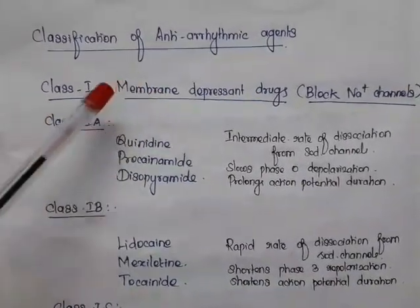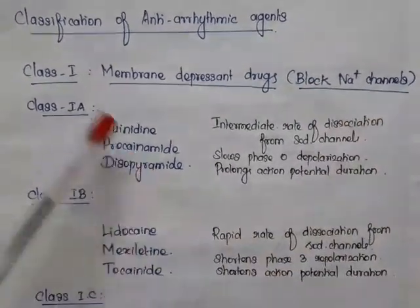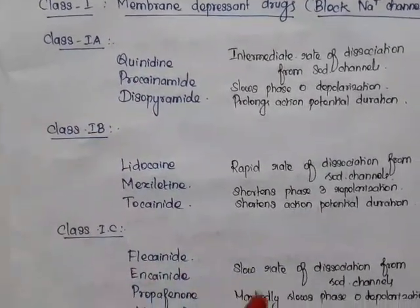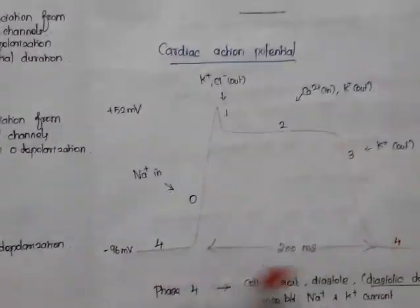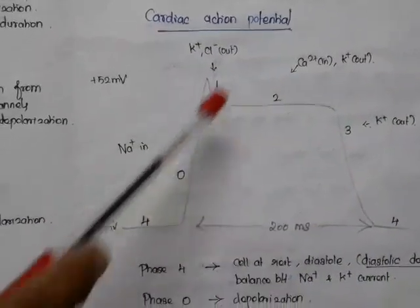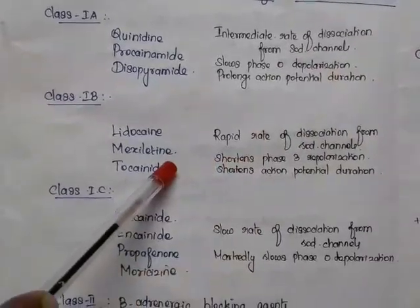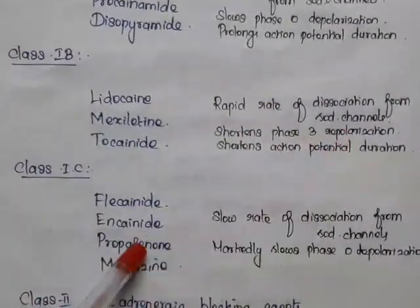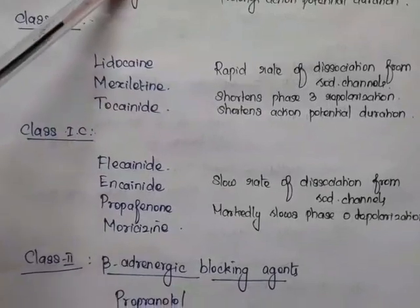The first class — membrane depressant drugs — are otherwise called membrane stabilizing agents. They block sodium channels and have three subclasses: Class 1a, 1b, and 1c. Recalling the phases of cardiac action potential (0, 1, 2, 3, 4): Class 1a slows phase 0 depolarization, Class 1b shortens phase 3 repolarization, and Class 1c markedly slows phase 0 depolarization.